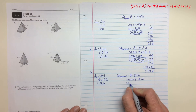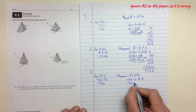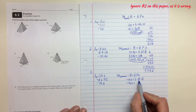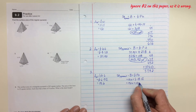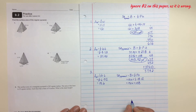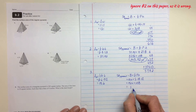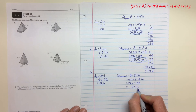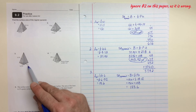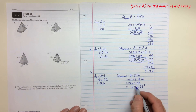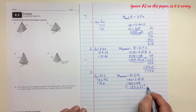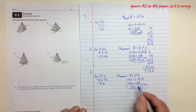So now I have 15.6 plus one-half times the perimeter times height. The perimeter is 6 plus 6 plus 6, which is 18, and the height is 12. One-half of 18 is 9, and 9 times 12 is 108. So 15.6 plus 108 equals 123.6.